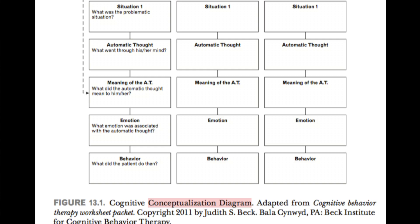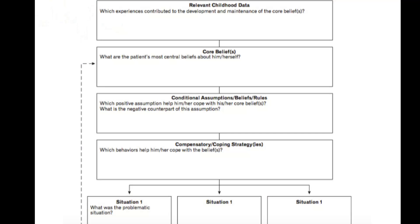However, the meaning of the automatic thought, represented by the dotted line that goes up, is what one looks for, indicating that intermediate beliefs and, above all, core beliefs are the sources which are responsible for the automatic thoughts and consequent emotions and behaviors. A good history collected in the initial sessions will bring the relevant childhood data that determined the development of different positive and negative core beliefs.